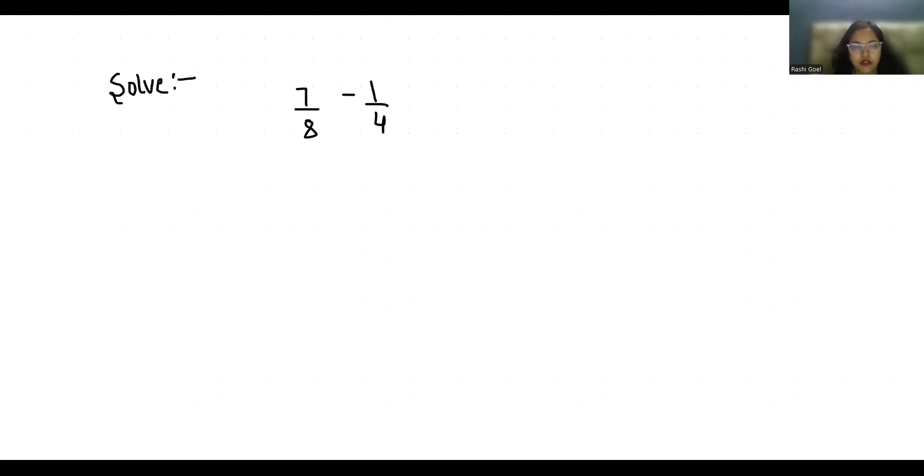So we are going to make a common denominator by taking LCM of the denominators 8 and 4. LCM means least common multiple. So how will we find it out?